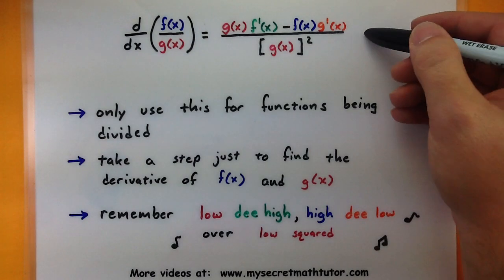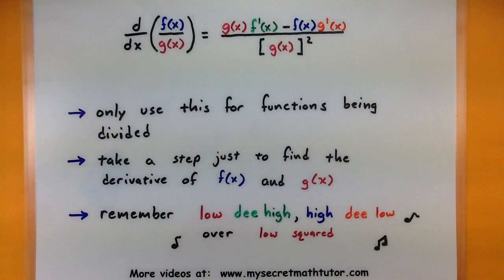Alright, now comes the fun part. Even though this formula is very complicated, there is a great way that you can actually go about memorizing this. All you have to remember is this little neat phrase down here. Low d high, high d low, all over low squared.